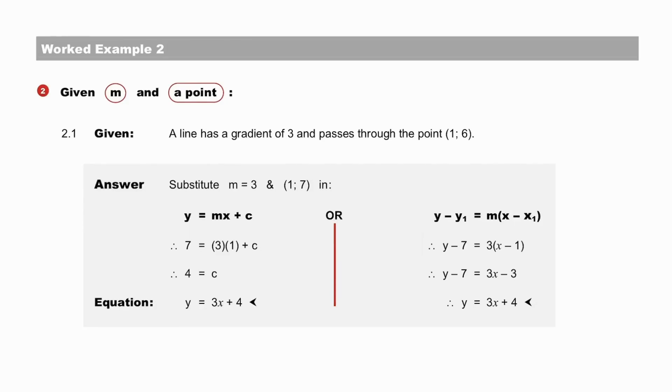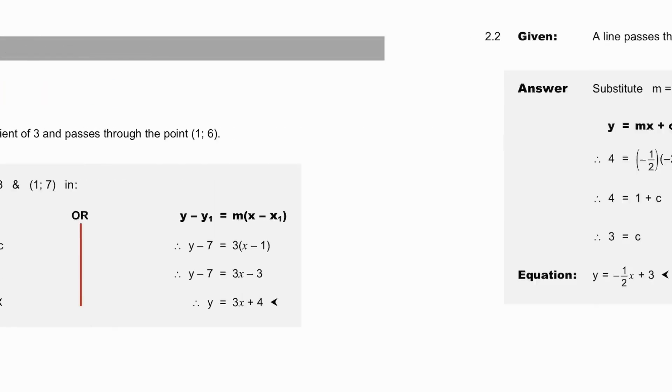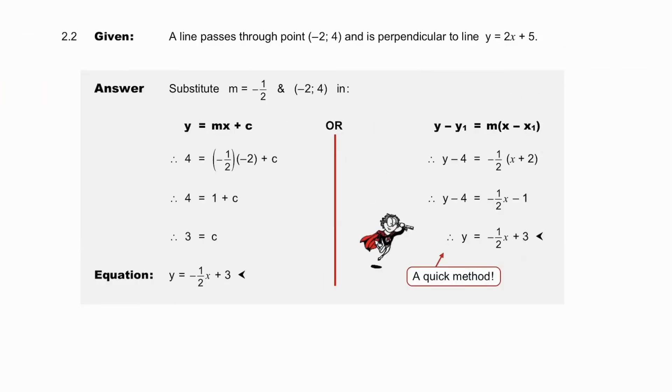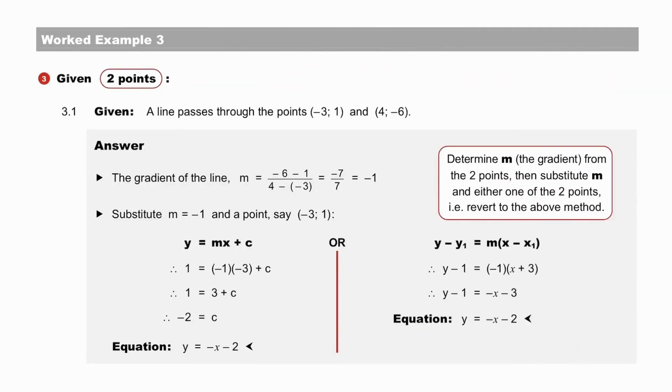Pause to check worked example 2. Are you using both forms of the equation of the line in your answer to 2.2? Notice that in this case, we have to have our line being perpendicular to line y equals 2x plus 5. Obviously, the gradient of that line is 2, and our line perpendicular to that will have a gradient of negative 1 over 2. In other words, negative 1 half.